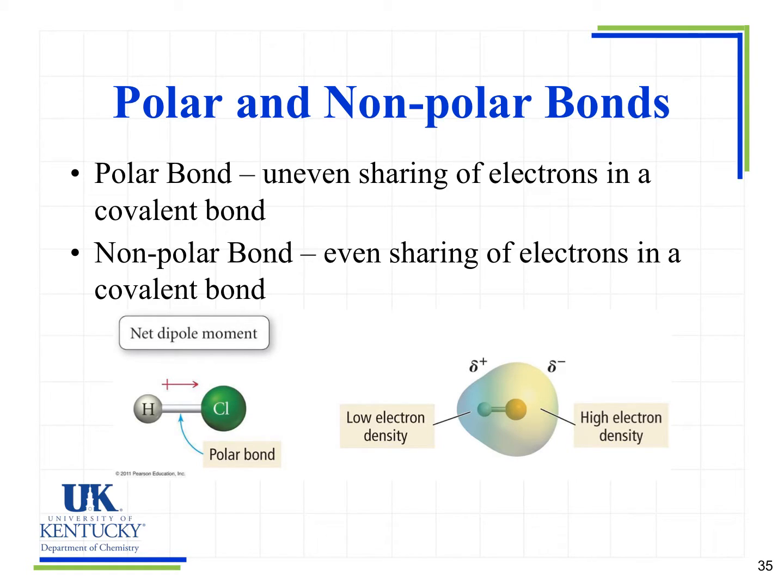Back in chapter 9, we looked at electronegativity and looked at polar and nonpolar bonds. Elements that had a difference in electronegativity had a polar bond, which resulted in the uneven sharing of electrons. Nonpolar meant even sharing of electrons. That was great when looking at a bond, but now we need to look at the entire molecule.